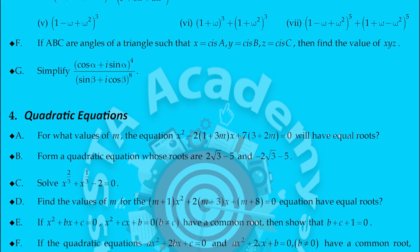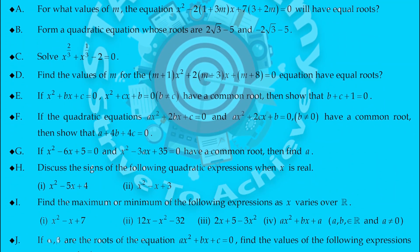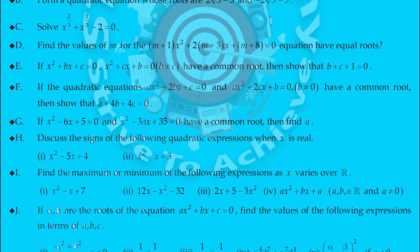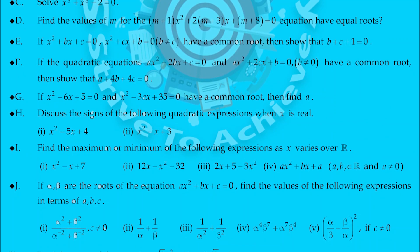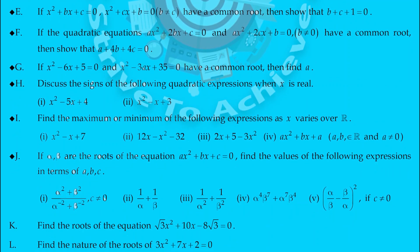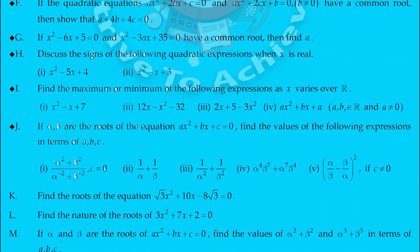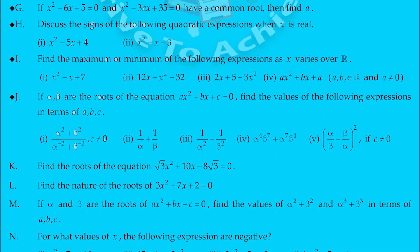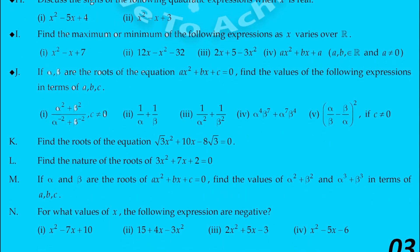The next chapter is quadratic equations. This chapter gives you maximum marks in IP. The first question A1: for what values of m does the equation x² - 2(1+2m)x + 7(3+2m) = 0 have equal roots? These are very important questions covering how to form a quadratic equation, different methods, how to find common roots, and finding the value of A. I have listed important questions from A to N.